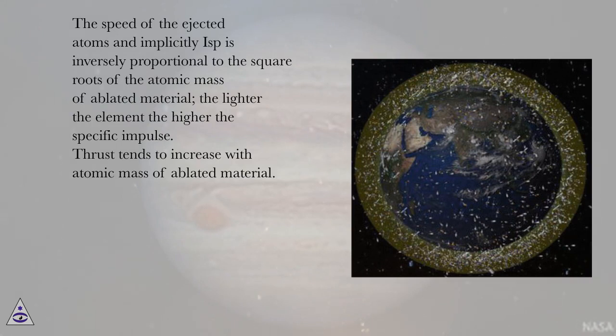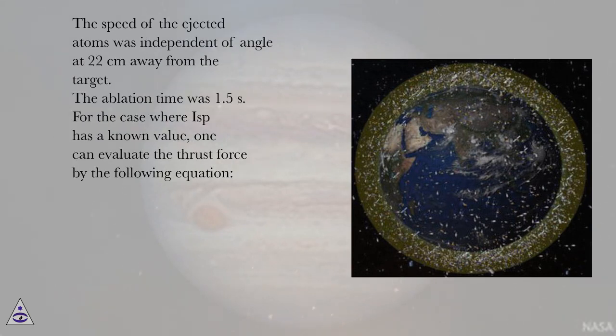The speed of the ejected atoms, and implicitly ISP, is inversely proportional to the square roots of the atomic mass of ablated material. The lighter the element, the higher the specific impulse. Thrust tends to increase with atomic mass of ablated material.